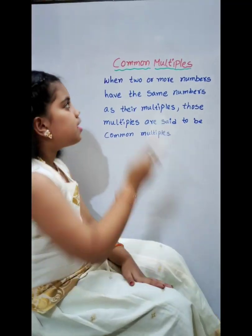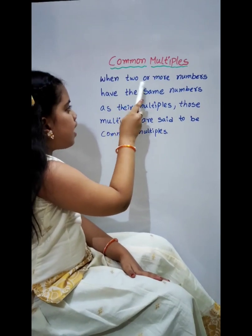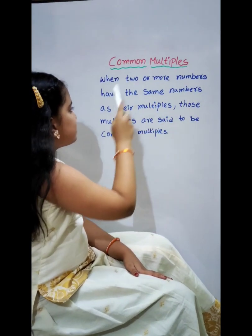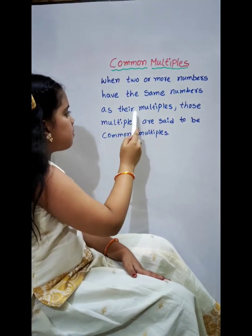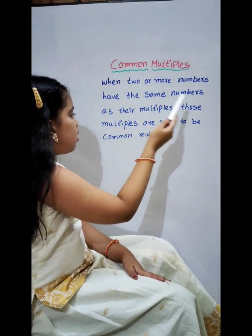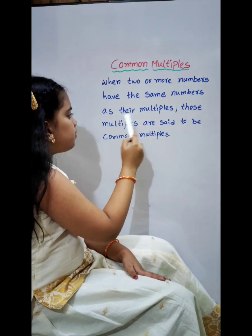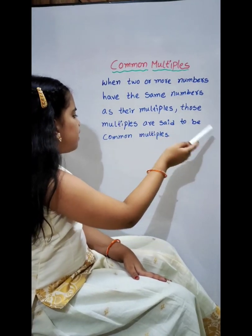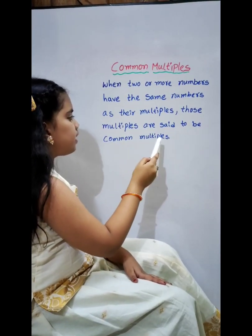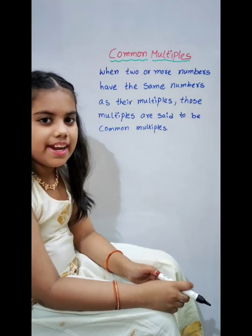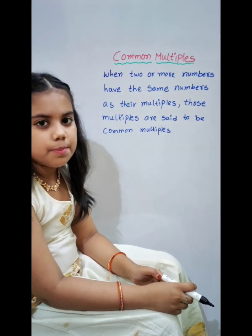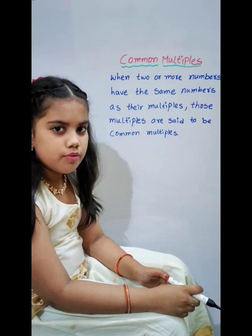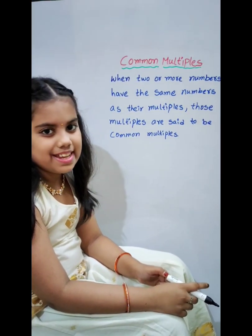Common multiples. When two or more numbers have the same numbers as their multiples, those multiples are said to be common multiples. For example, common multiples of 4 and 6.